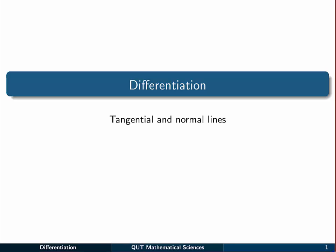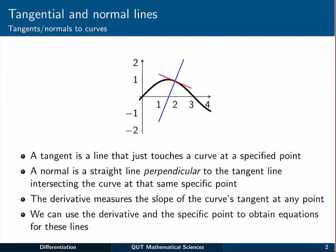In this video, we look at finding tangential and normal lines to curves using differentiation. We've already talked about tangent lines to curves. Tangent lines are just lines that just barely scrape past and touch a curve at a specified point, like the red curve here on the diagram shown.